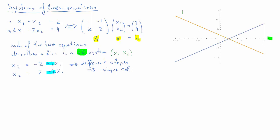Here we have the two equations represented graphically, with X1 and X2 on the coordinate axes. Equation 1 has an intercept of negative 2 and a slope of 1. Equation 2, the orange line, has an intercept of plus 2 and a slope of negative 1. These two equations present one unique solution — there's only one point where the two lines intersect, and that's at the point (2, 0).